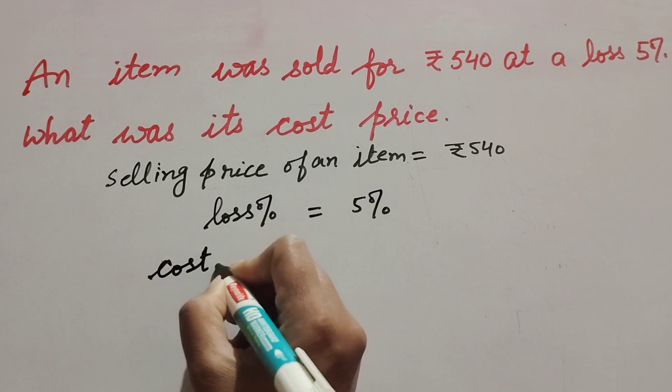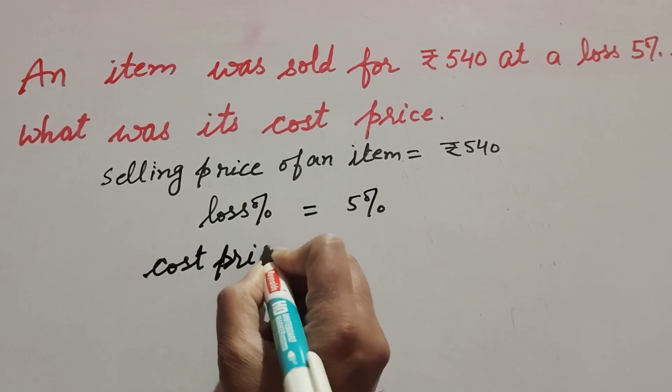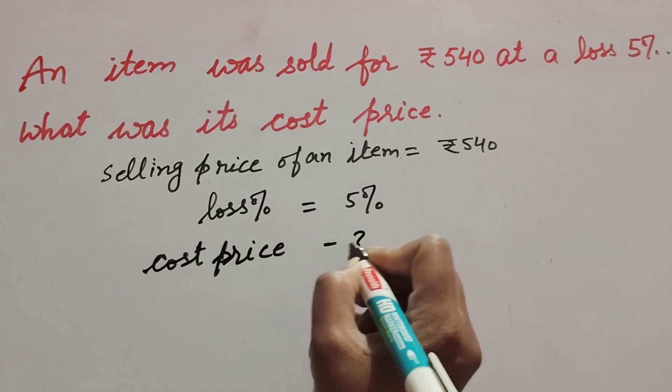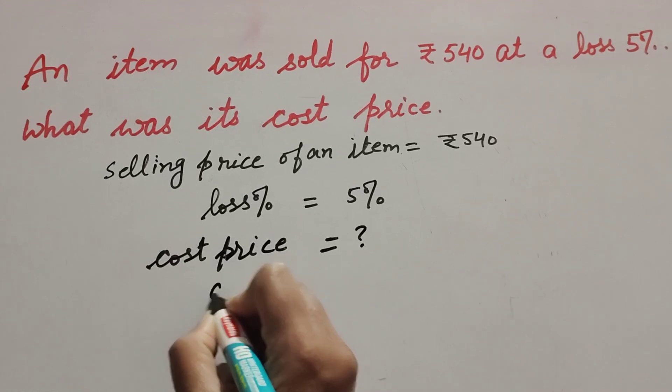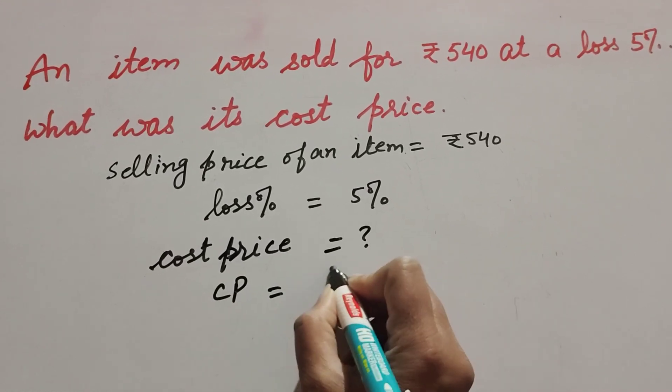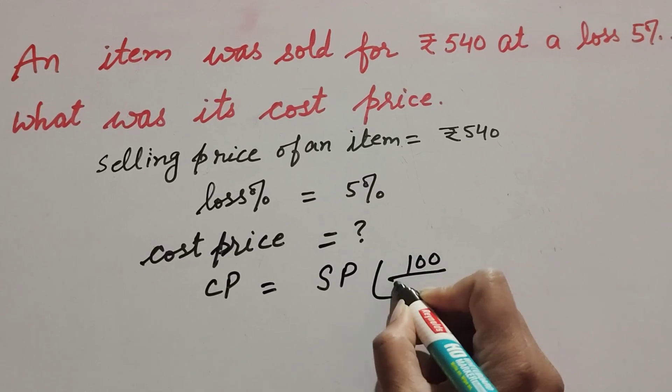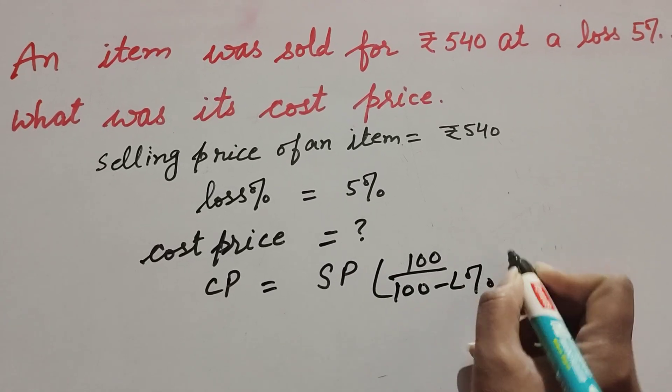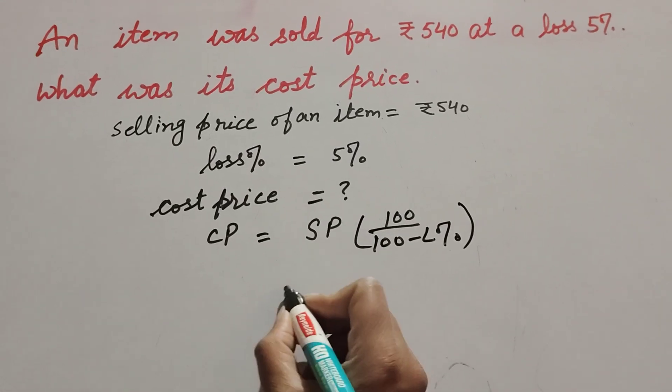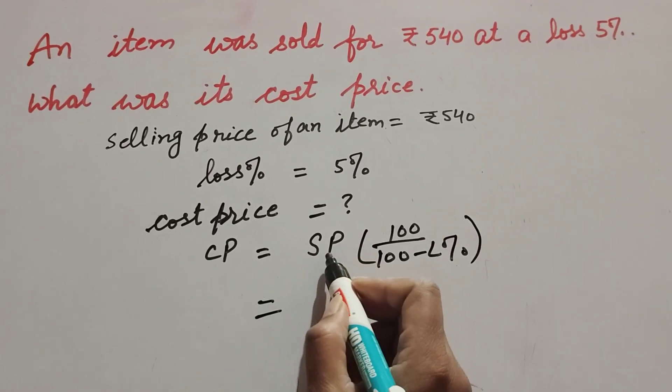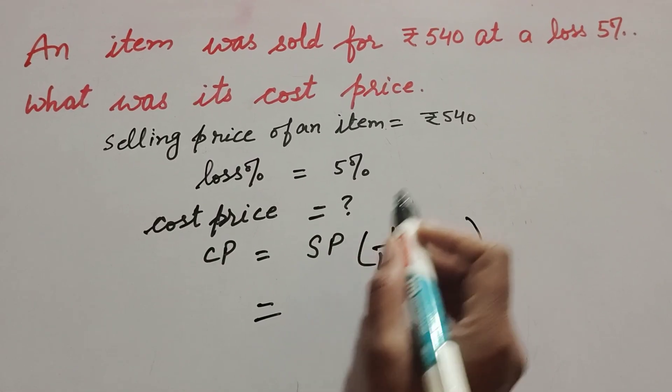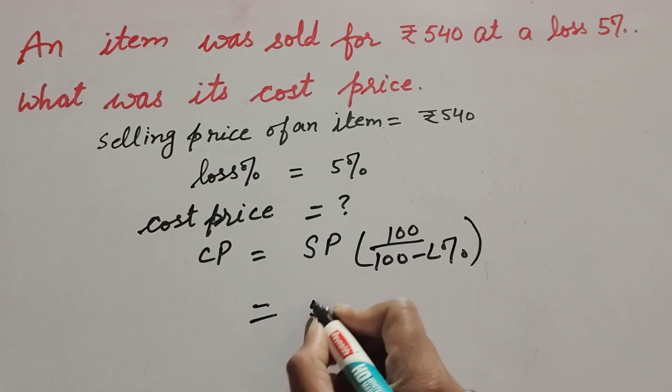Cost price, that we have to find. So we know the formula to find cost price. Cost price is equal to SP times 100 over 100 minus loss percentage. In this, SP is equal to rupees 540 multiply